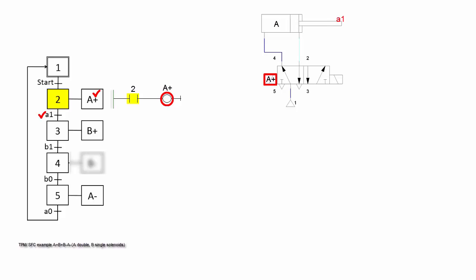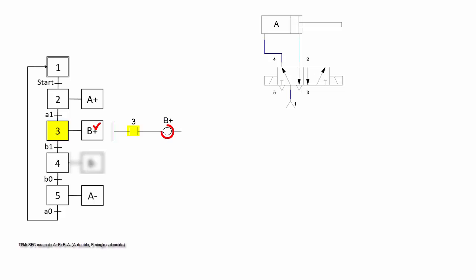When a1 is activated, step 2 is off and step 3 is on, but A plus still stays at step 3. B plus is activated and cylinder B extends.